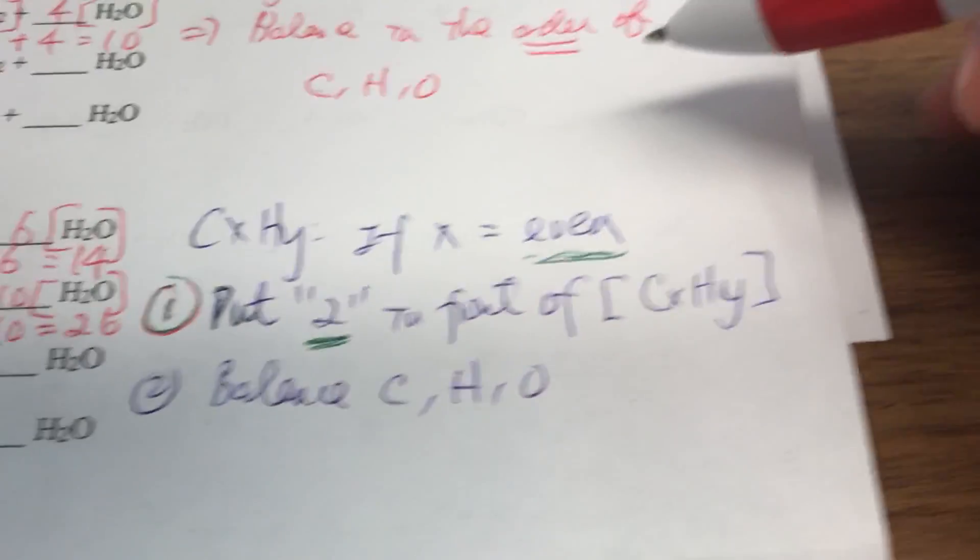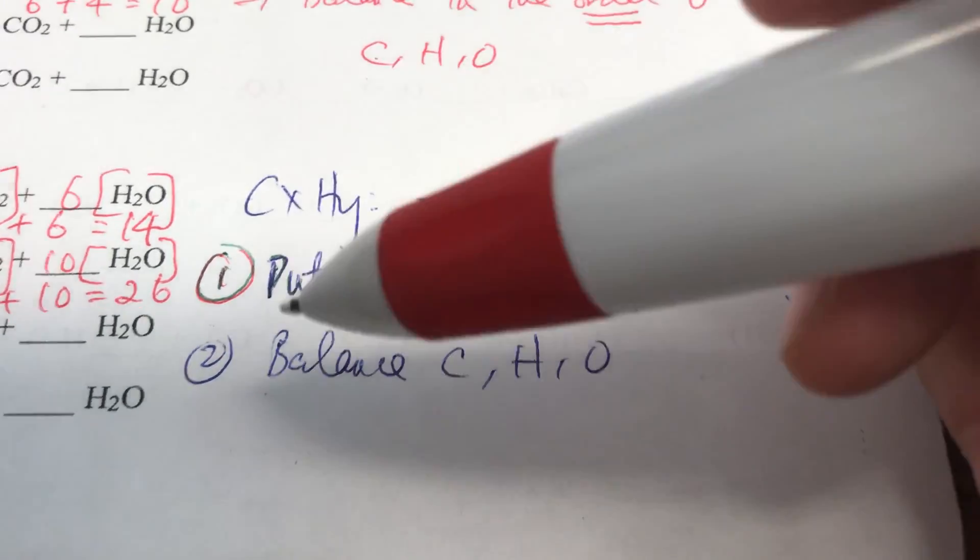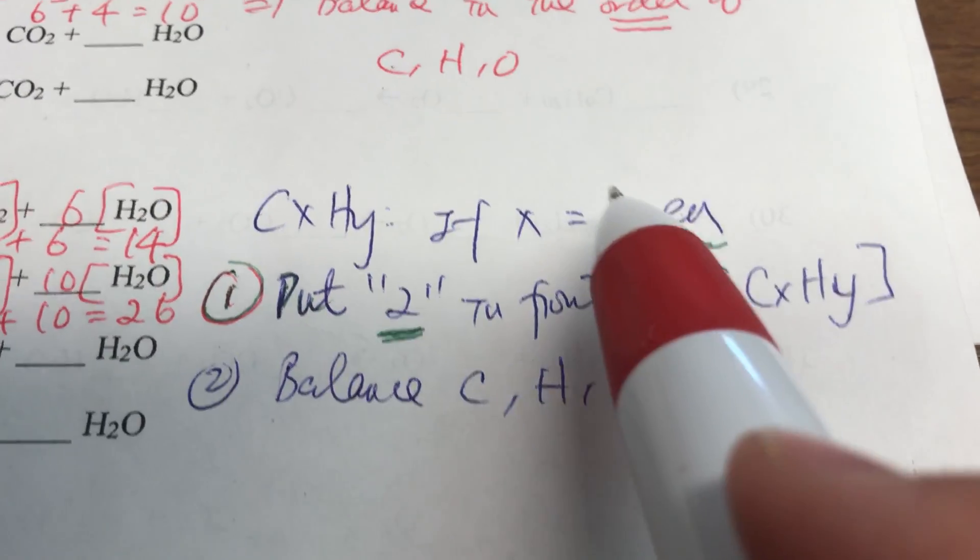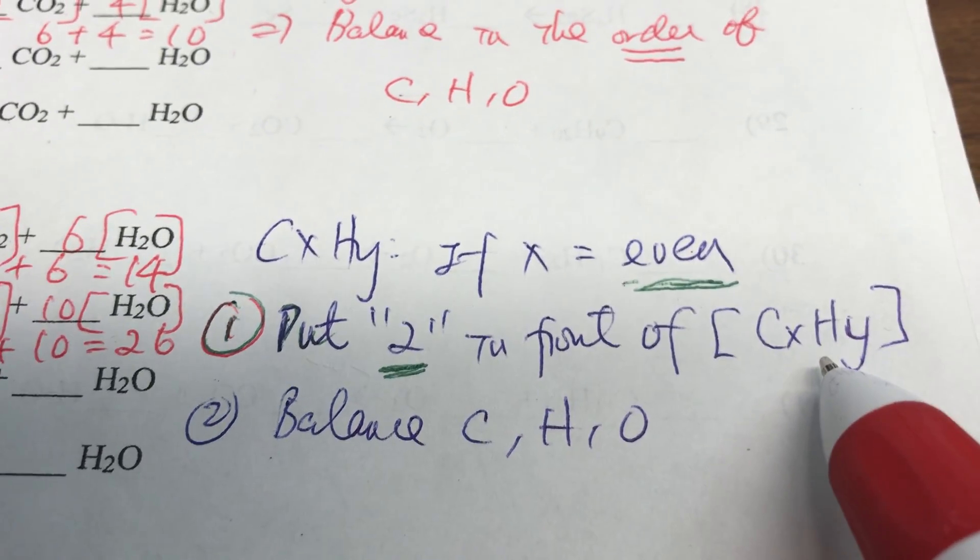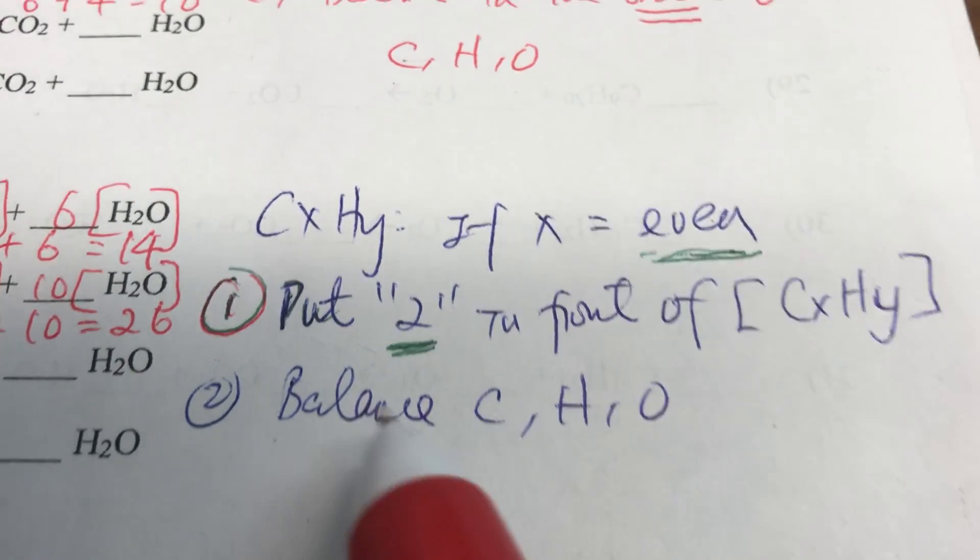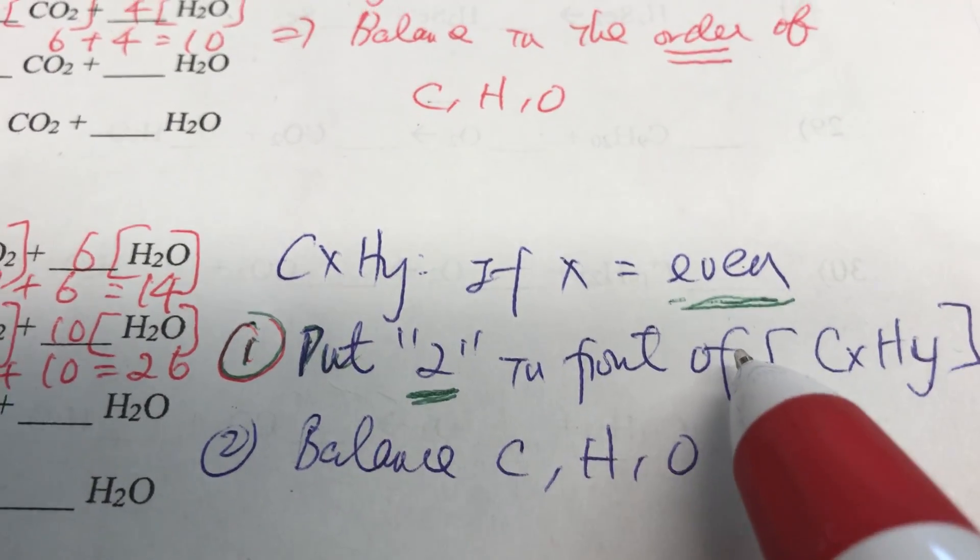So finally, the bottom part is CXHY. If the X is even number, you have to do one step before. It's even, you have to put the two in front of CXHY. Then you can balance CHO. So just one extra step, put the two in front of CXHY.